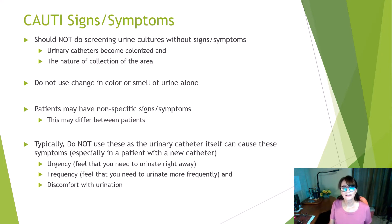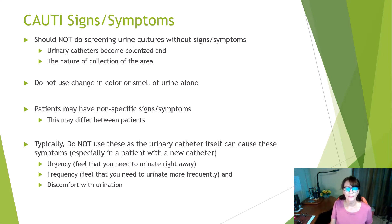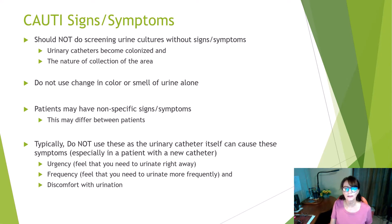So what are the signs and symptoms of a CAUTI? First, you should not be getting any screening urinary cultures without some form of signs or symptoms, because of that colonization issue. Do not use a change in the color or smell of your urine as a sign of a urinary tract infection — you should have some other form of symptoms. Patients with a catheter often have atypical symptoms. Typically, they don't have the sense of needing to urinate frequently, urgency, or discomfort with urination as signs of infection, because the catheter itself can cause those symptoms.